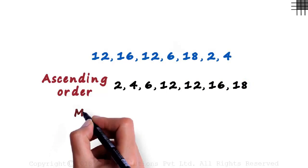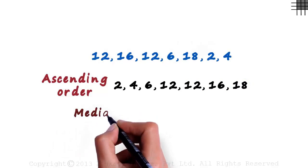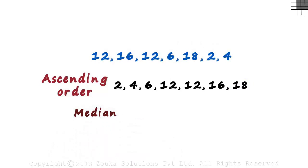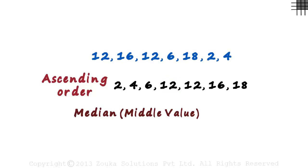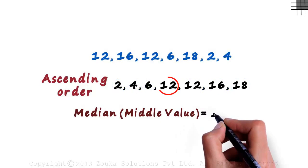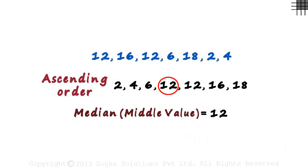Now to find the median, we just have to look for the middle value. This is the middle term — it has three terms on its left and three on its right. Twelve is the median of this set of numbers.